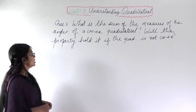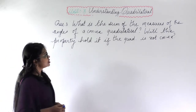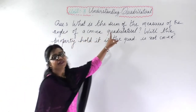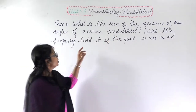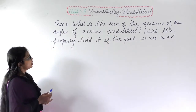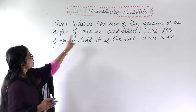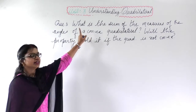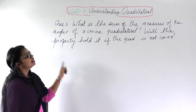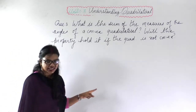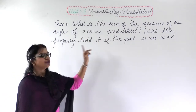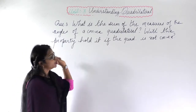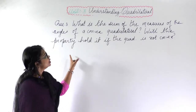This is Question 3: what is the sum of the measure of the angles of a convex quadrilateral? We have studied that the sum of the angles of a convex quadrilateral is 360 degrees — this was proved by theorem in the previous video.